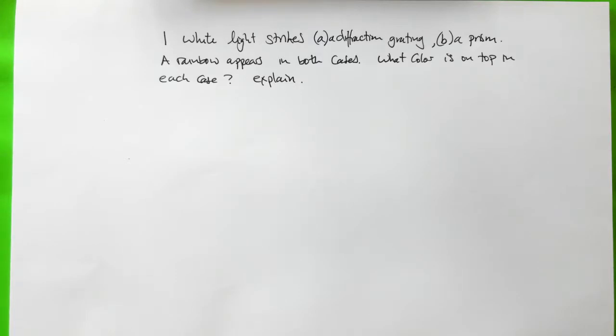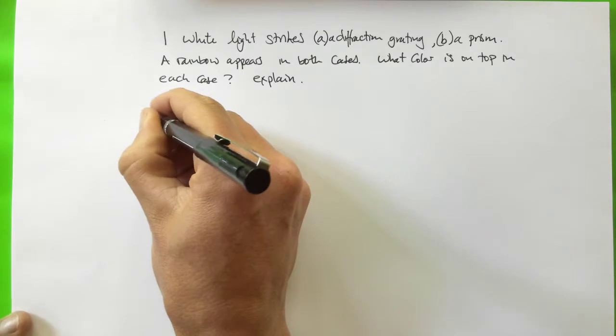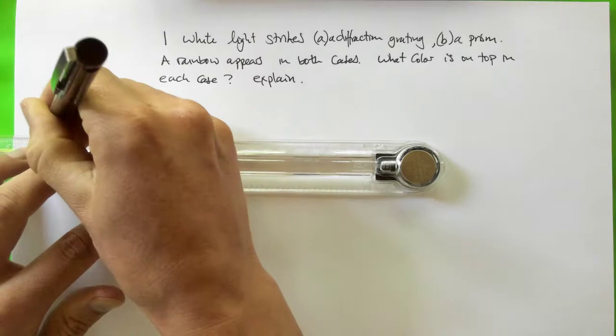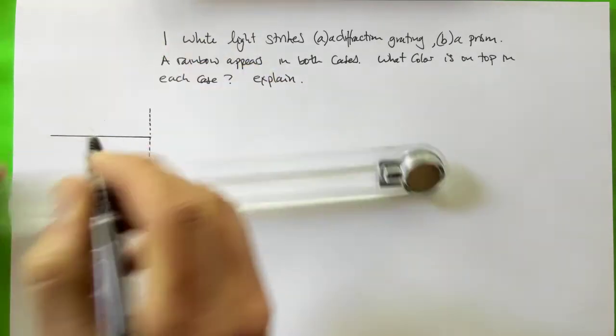Let's look at case A first: light striking a diffraction grating. So this little dotted line is going to represent the diffraction grating. I'll draw a line with my ruler that's going to represent the light coming in, the incident light.